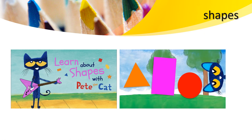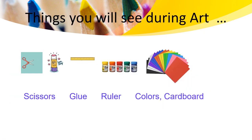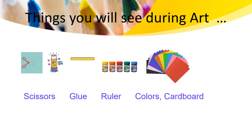There is a triangle. What things do you see around you as a triangle? Things you use during art class. You guys are going to use scissors, glue, rulers, cardboard, and also colors.